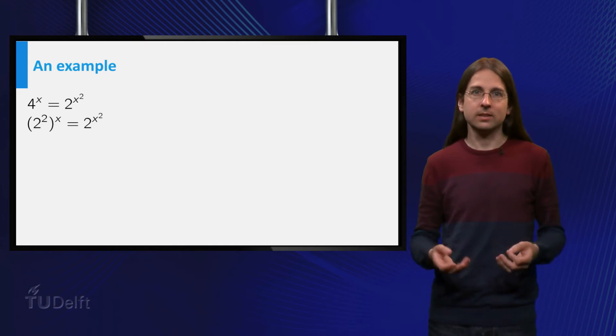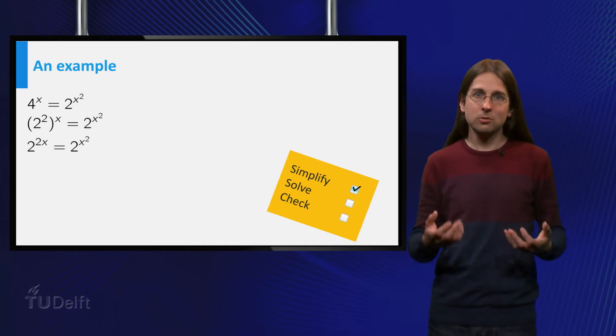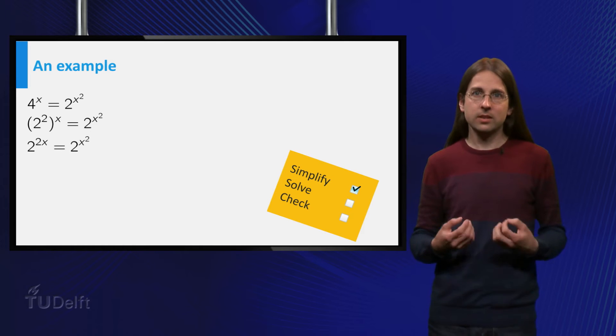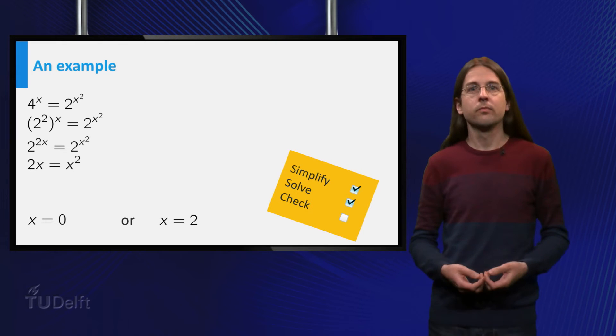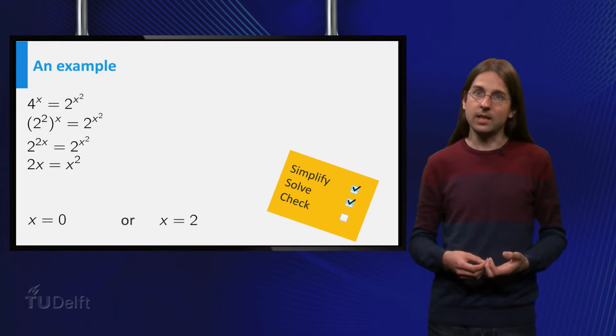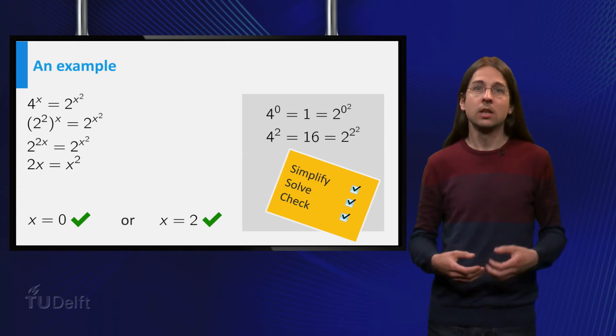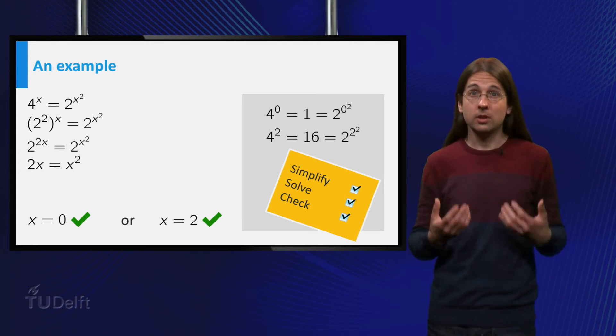which is 2^(2x). This gives 2^(2x) = 2^(x²), which is an equation in standard form. Therefore, we find 2x = x². The solutions are x = 0 and x = 2. And remember to check the solutions at the end. In this case we get 1 = 1 for x = 0, and 16 = 16 for x = 2, so both are valid solutions.